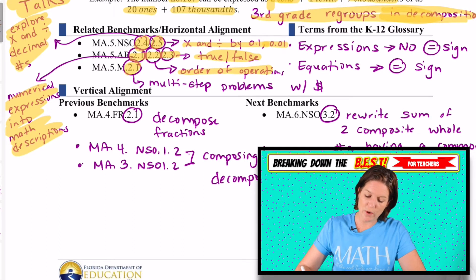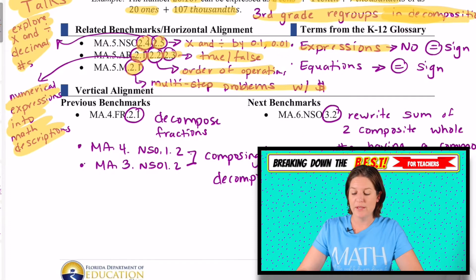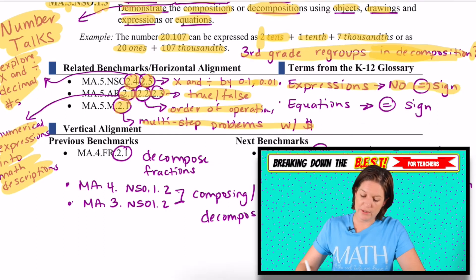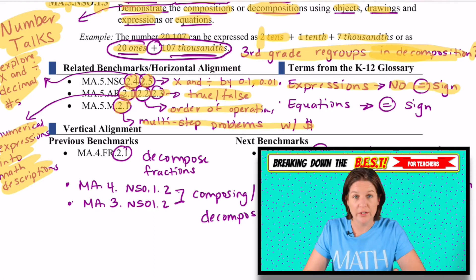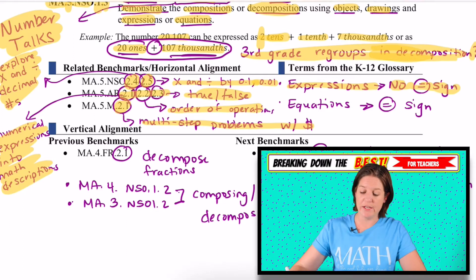So 2.1 is numerical expressions into math descriptions, which helps with order of operations. 2.2 is where we're solving using order of operations and 2.3 is true-false equations and also implementing order of operations there. M.2.1 is the multi-step problems with money. And here they did not provide any terms, but I said, you know what? I think expressions are important to know because an expression is where there is no equal sign.